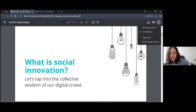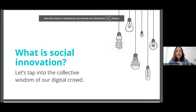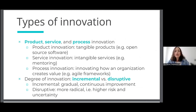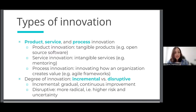In traditional innovation management, you often have different types of innovation — this is a short taxonomy, not exhaustive — but you will often hear about product, service, and process innovation. And I find that social innovation can actually be all of this. It can be a new product, a new service like mentoring or consulting, or process innovation such as introducing agile frameworks.